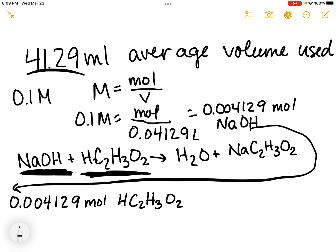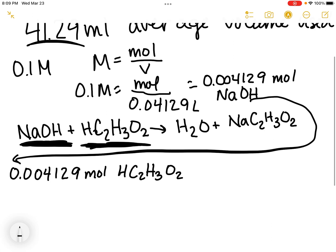Step three of our calculation is to determine how many grams of acetic acid we have by converting the number of moles to mass using its molar mass. I'm going to do a mole conversion.